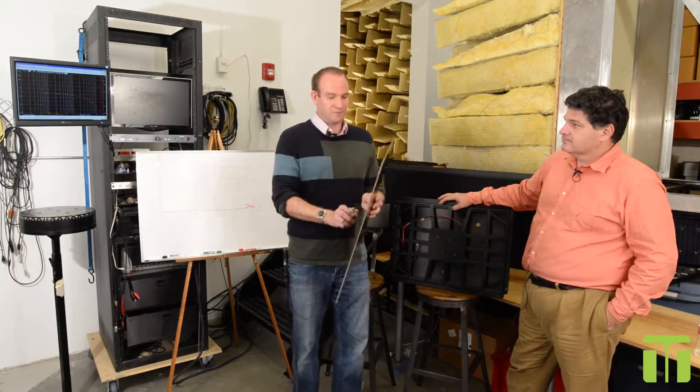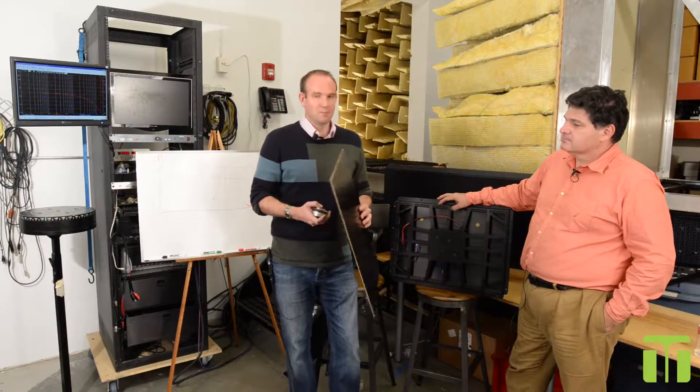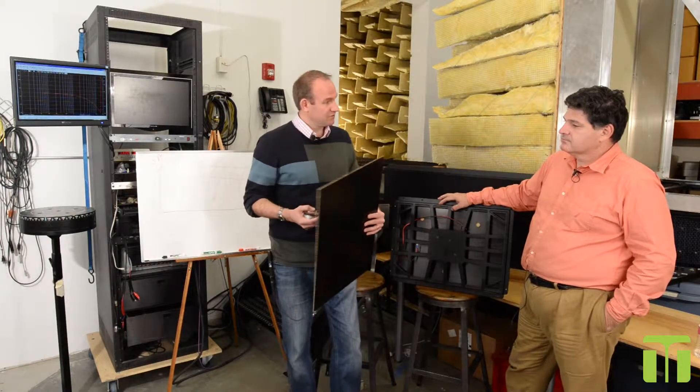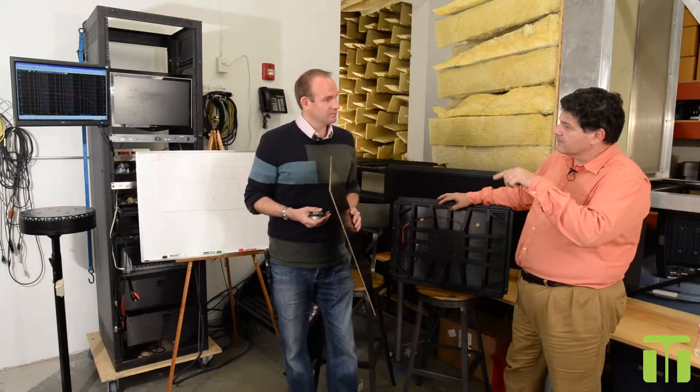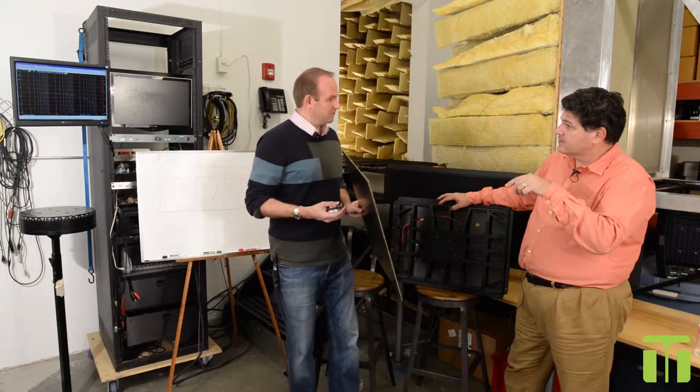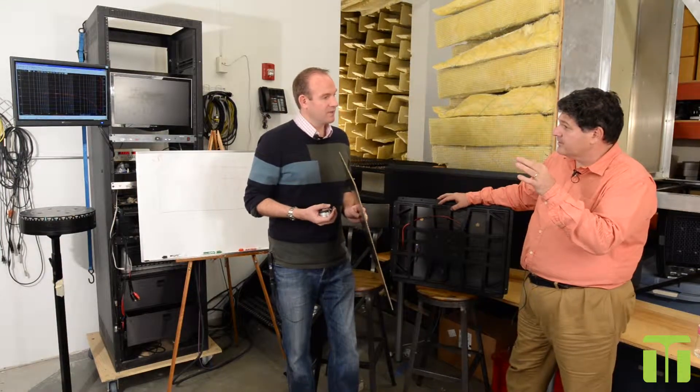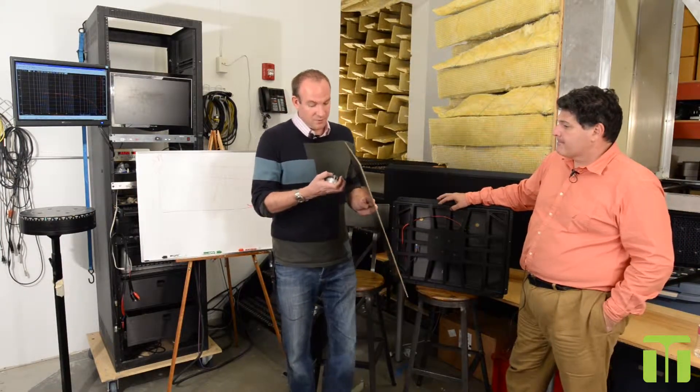You want to keep the exciters fairly close together because at very high frequencies you get interactions. The closer they are, the smoother your power response will be. Those interactions are a function of the distance between each other and also the size of the coil—the spacing of the exciters from each other.